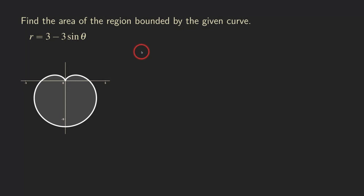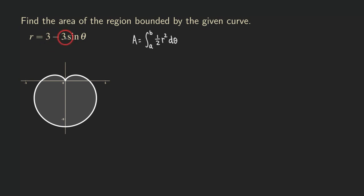There is a formula that will allow us to find this area really easily. That formula is: A equals the integral from a to b of one half r squared d-theta. Because we have a single polar curve and we want to find the area, we can use this formula. We need to plug in our r here.